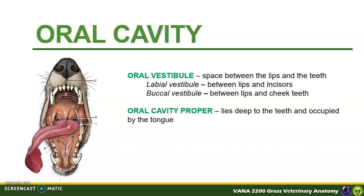If you put your tongue in front of your incisors and your lips, the space occupied by your tongue is the labial vestibule, or the space between the lips and the incisor. If you directed your tongue laterally to your cheek, the space occupied by your tongue between the lips and the cheek is called the buccal vestibule.